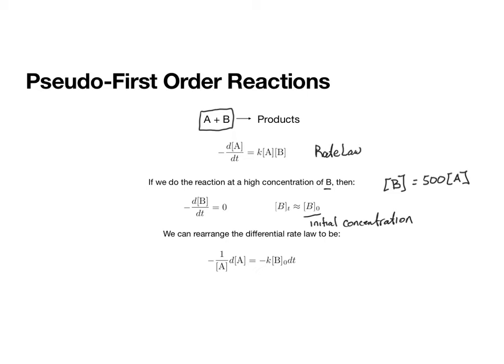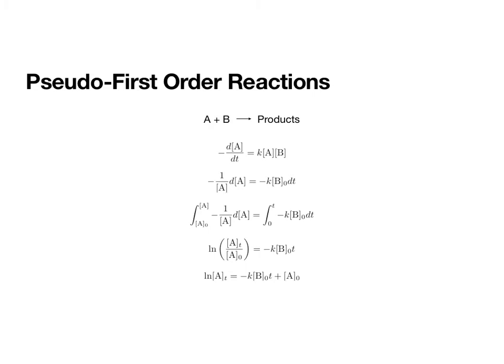And this allows us to rearrange the differential rate law so that B is now over with K and t. And instead of using B at some time, we are using the initial concentration of B. So now, this is where we were at the end of the last slide. Now we solve our rate law the way that we've solved our rate law before. We go from the differential to the integrated.